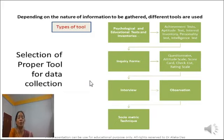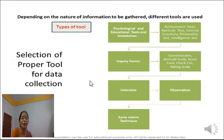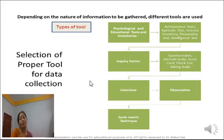Similarly, suppose we have to collect data from 500 or 1000 samples regarding some social situation. In that case, it is not possible for the investigator to contact each person and collect data. So here, the questionnaire will be the appropriate data-collecting device. And suppose we have to collect data about the language development of three-year-old children — in that case, we have to choose the data-collecting device: observation.